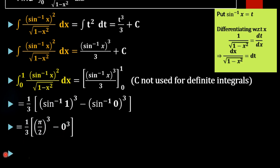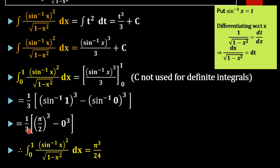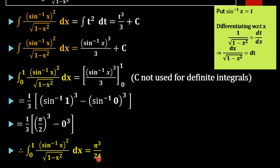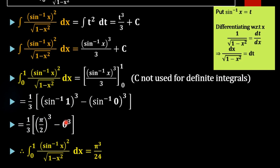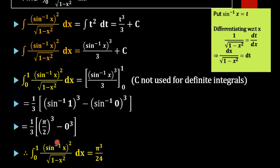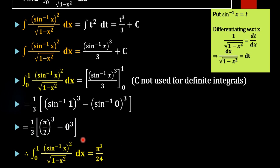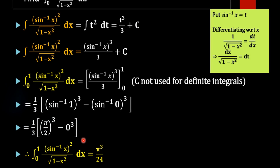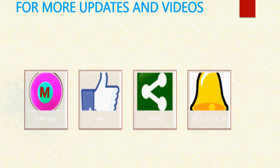In the next step, pi by 2 whole cubed equals pi cubed by 8, and multiplying by 1 by 3 gives pi cubed by 24. The 0 term becomes 0. So the final result is pi cubed by 24. Thank you.